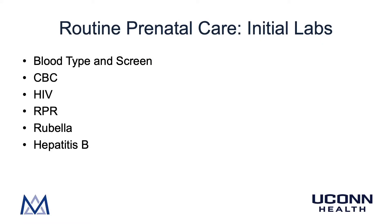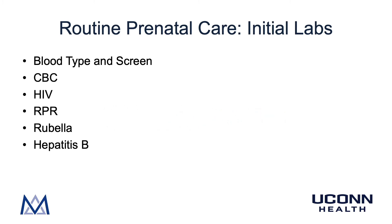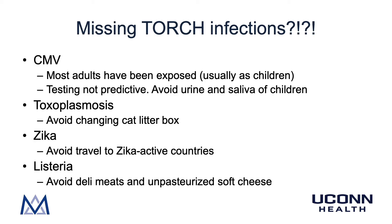The next four labs are drawn because they can cross to the baby and cause congenital infections. These include HIV, syphilis (or RPR), rubella, and hepatitis B. These are the obvious TORCH infections, but there are certain infections not on the list. The reason those aren't tested for during pregnancy is that they are not reliable in terms of predicting congenital infection, and we use public health initiatives to decrease the probability that a patient will be infected during her pregnancy.